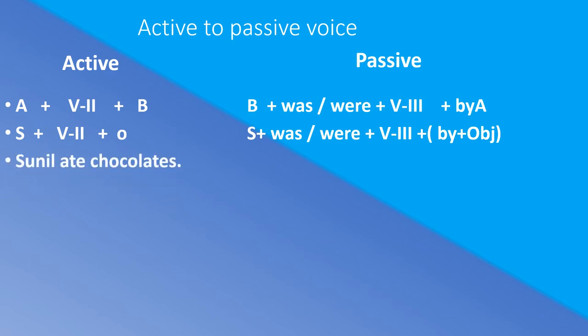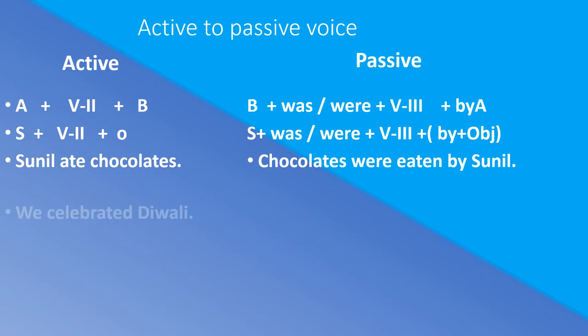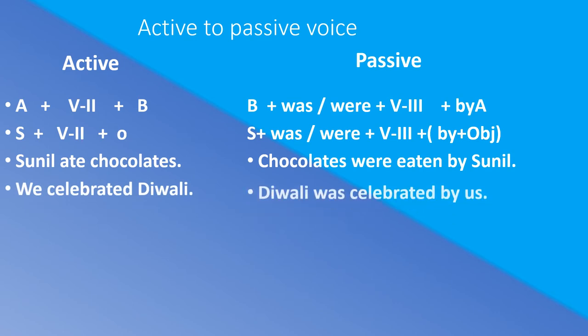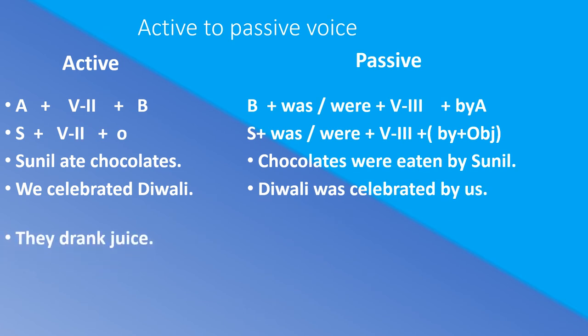Examples: Active: 'Sunil ate chocolates.' (Sunil ne chocolate khaye.) Passive: 'Chocolates were eaten by Sunil.' (Chocolates Sunil ke dwara khaye gaye.) Active: 'We celebrated Diwali.' (Humne Diwali manai.) Passive: 'Diwali was celebrated by us.' (Diwali humare dwara manai gayi.) Active: 'They drank juice.' (Unhone juice piya.) Passive: 'Juice was drunk by them.' (Juice unke dwara piya gaya.)